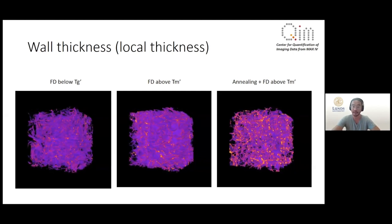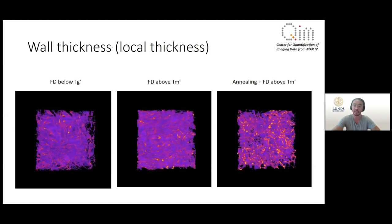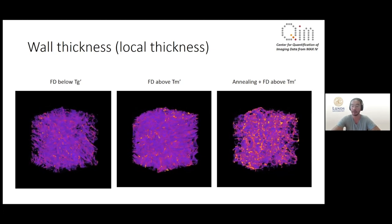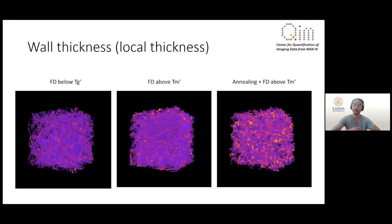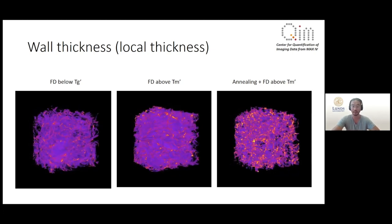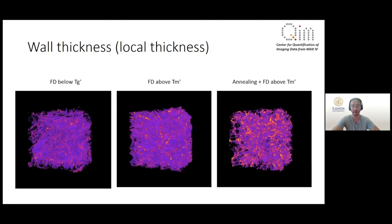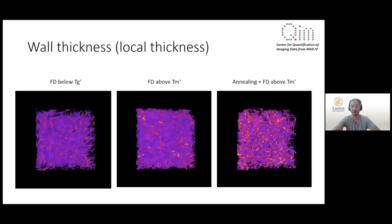Looking at the local thickness here we can see that the thin parts are colored purple and the thicker parts are colored red and yellow. As expected, the difference between the first and second sample is not that noticeable while the third samples clearly have a thicker material, confirming our hypothesis. This is very valuable information when we want to investigate how structures can influence the shelf life of probiotics.